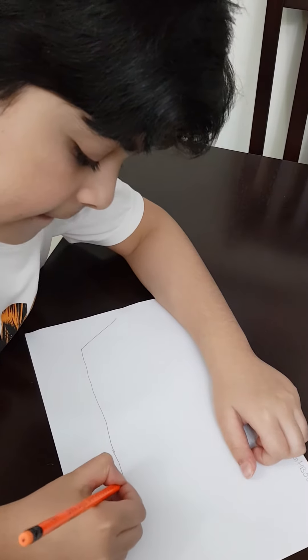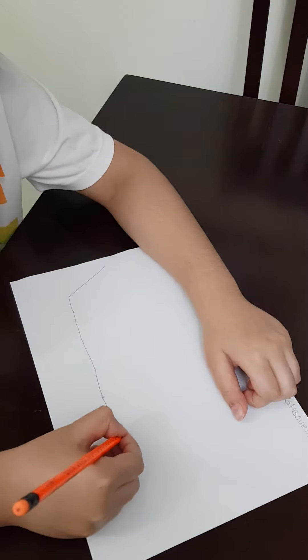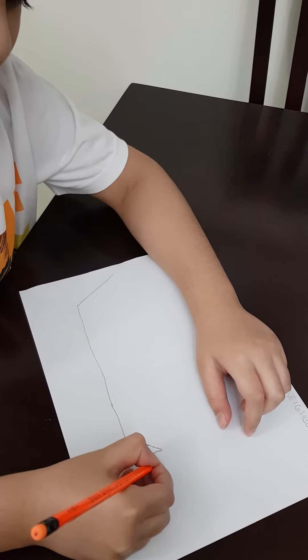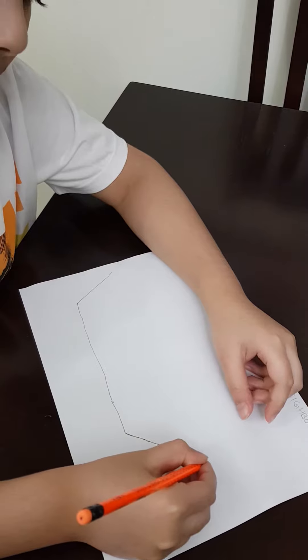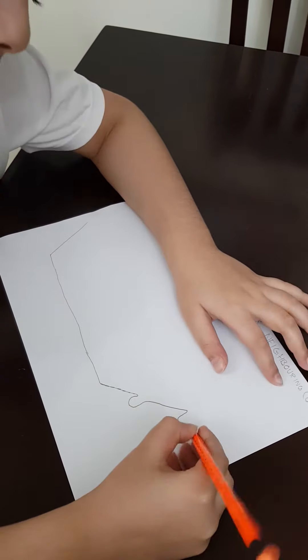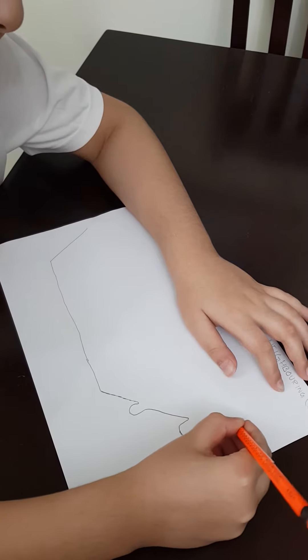If you want to, you can use a ruler. I'm just trying to do it freehand. And then we go up, and this is a mini ear, and this is like the mouth of my horse.